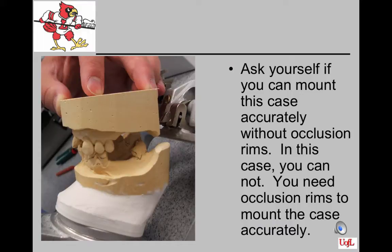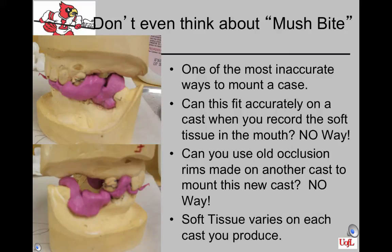Pour the cast in a gypsum product and trim it leaving the vestibular roll and a nice land area. Ask yourself if you can mount this case by hand articulating the two casts without doubt about how the posterior areas approximate each other, and whether you can stabilize them in the proper position. If the answer is no, you need occlusion rims and a jaw registration record. Avoid the mush bite — it is one of the most inaccurate ways to mount a case.